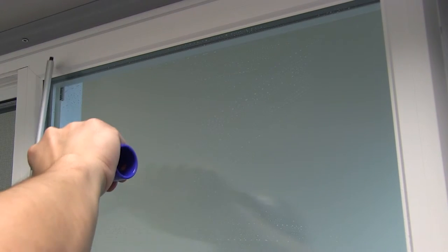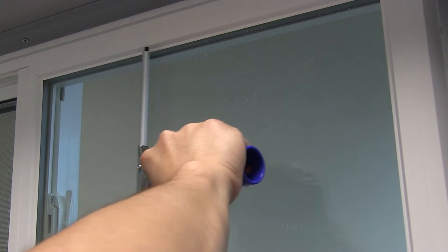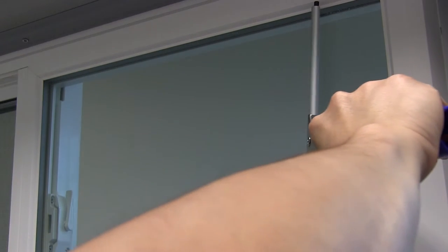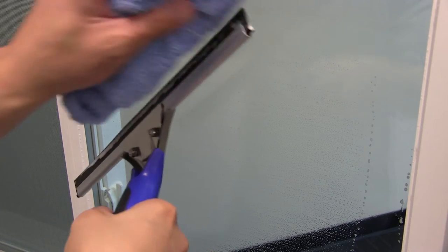Use a squeegee to remove all the cleaning solution from the window. Starting from the top, squeegee from left to right. At the end of each stroke, wipe the squeegee's blade clean with a lint-free towel.